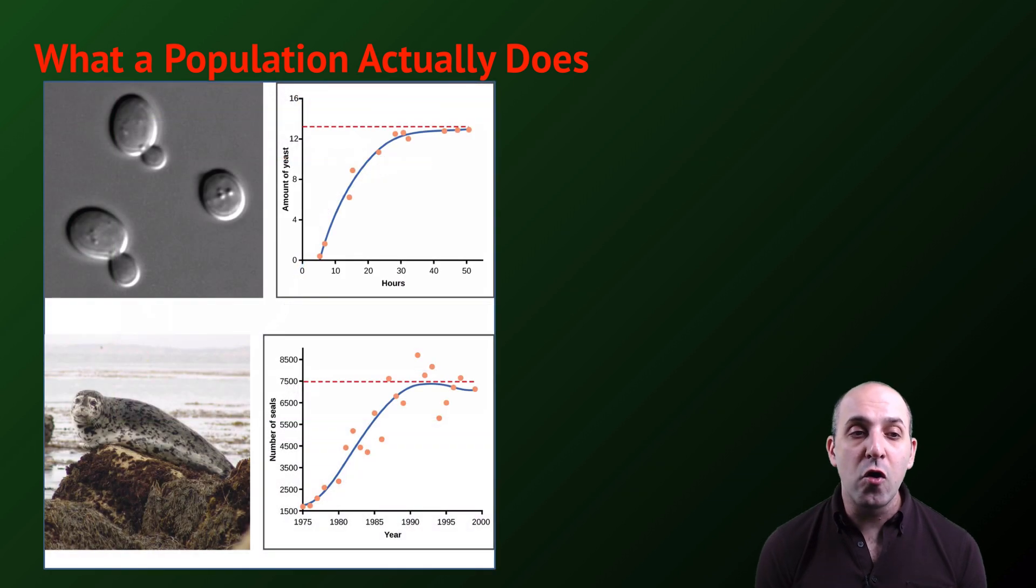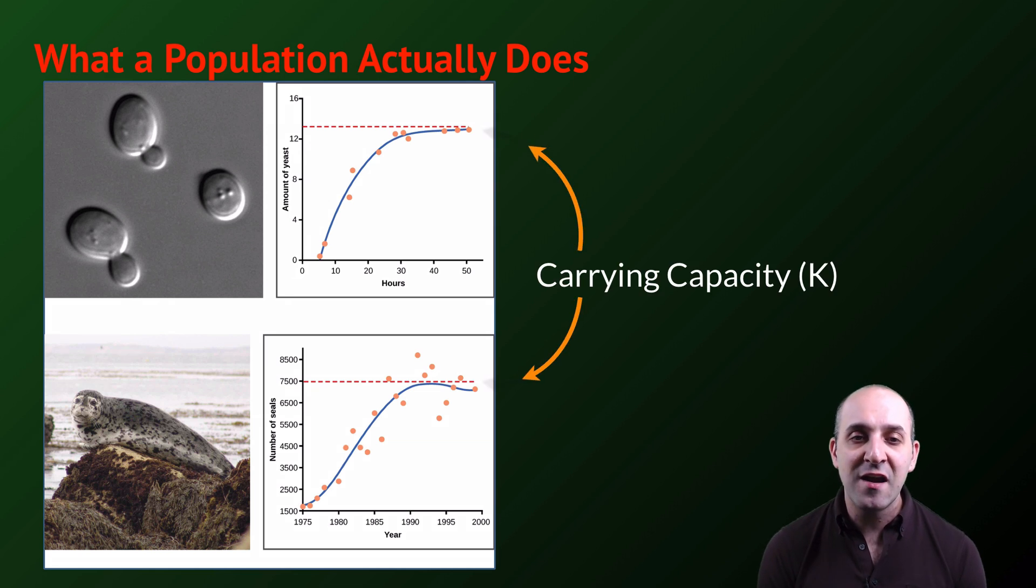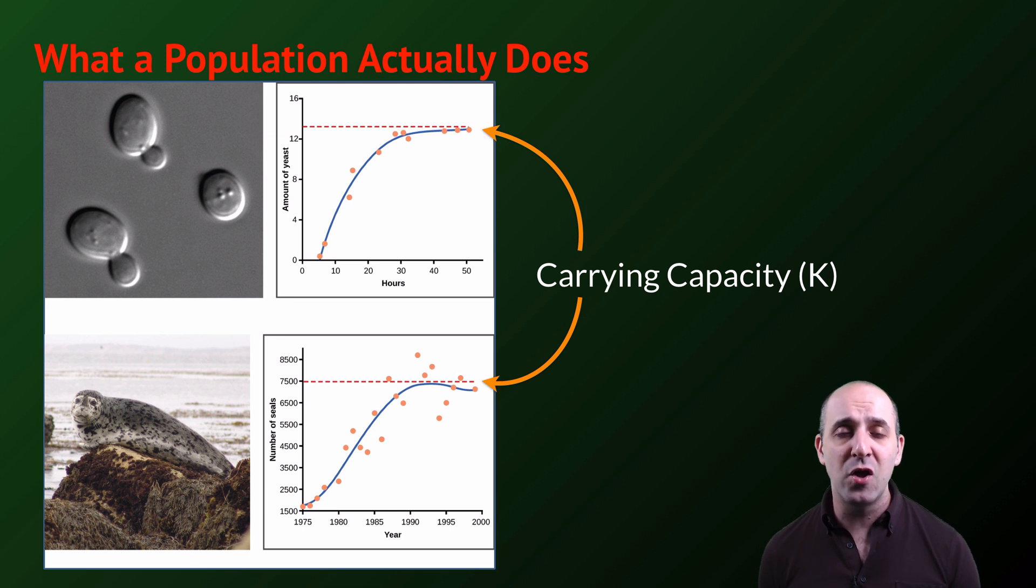The logistic growth model is shown here for yeast in the top graph, and shown down in the bottom for a population of seals that was recovering from a period of extensive hunting. Notice that in each case, there is a clear carrying capacity for these populations in their environments. The carrying capacity is symbolized as K, and it's important to understand that it is not a fixed value. Particularly in a non-laboratory setting, the carrying capacity for any population in the environment is going to fluctuate from year to year, or season to season, as the amount of resources change as well, which helps explain the fluctuation around the average carrying capacity that you see in that seal graph, for instance.